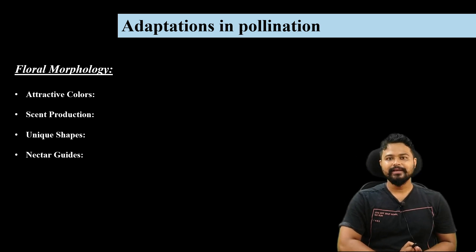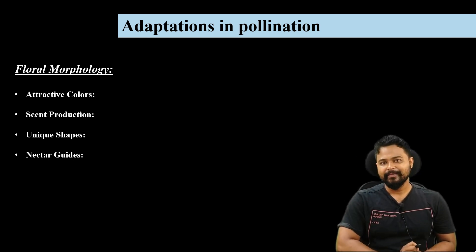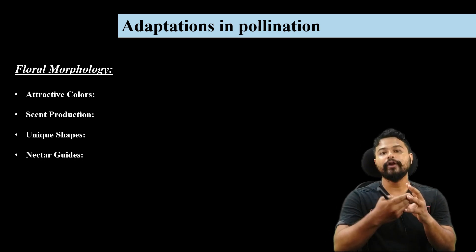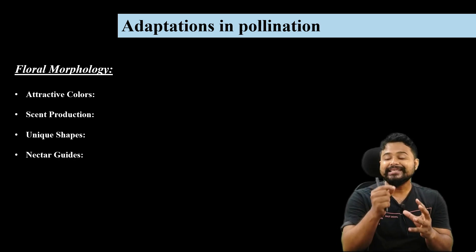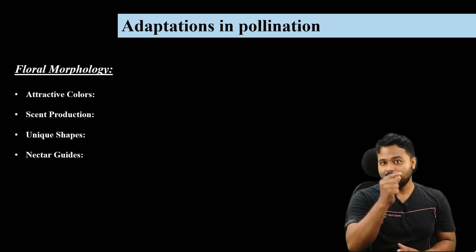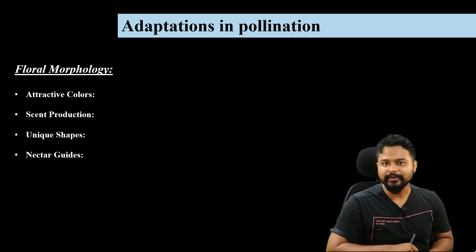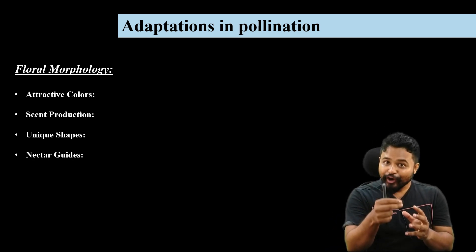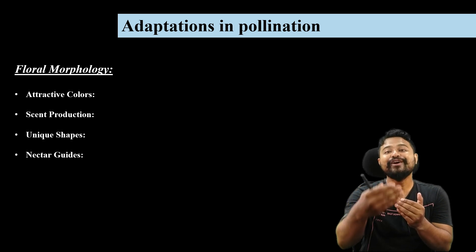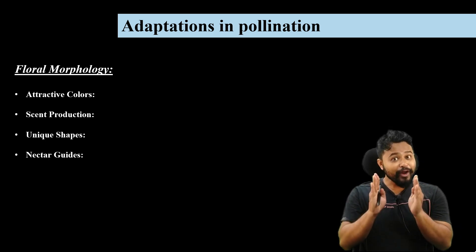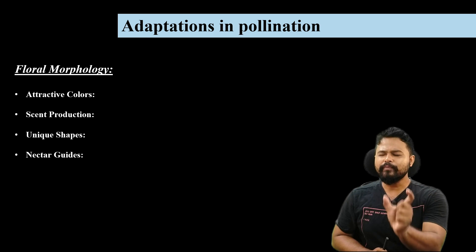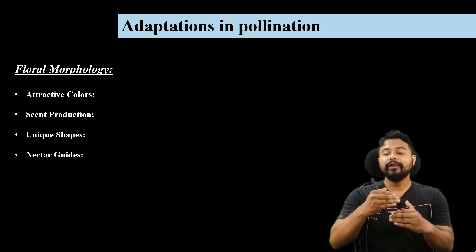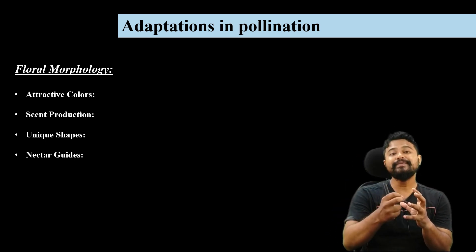What are the adaptations in pollination? Flowers will modify and adapt. Successful pollination is needed — and for successful pollination, fertilization is needed, seed production is needed, and reproduction is needed. So pollination is a very crucial step, and plants will adapt or modify to attract pollinators.